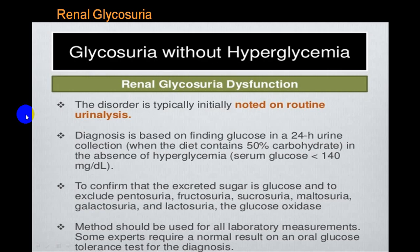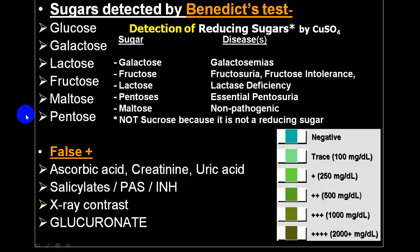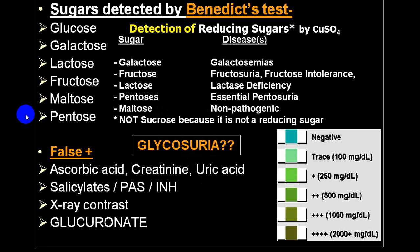This diagram shows a condition we call renal glycosuria, also called renal tubular dysfunction. Sugar may be detected by Benedict's test. In Benedict's test, you can detect reducing sugars, because Benedict's solution contains copper sulfate which will detect glucose, galactose, fructose, lactose, pentose, and maltose. However, sucrose will not be detected.